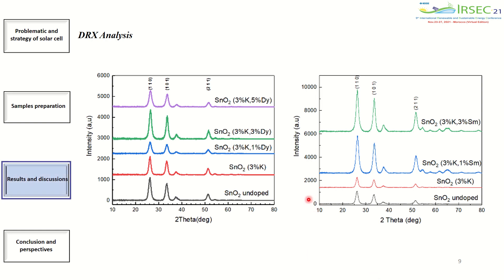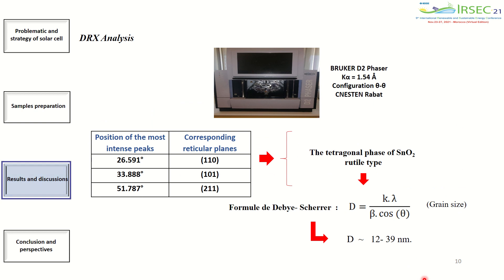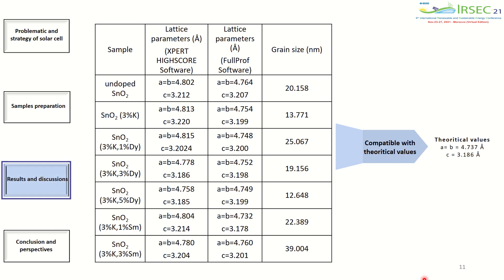The second technique is X-ray diffraction. As you can see, all the doped powders show a slight shift in the position of the peaks with respect to pure SnO₂. This is particularly due to the low doping rate. The most intense peaks correspond to the reticular planes (110), (101), and (211) of the rutile-type phase of SnO₂.